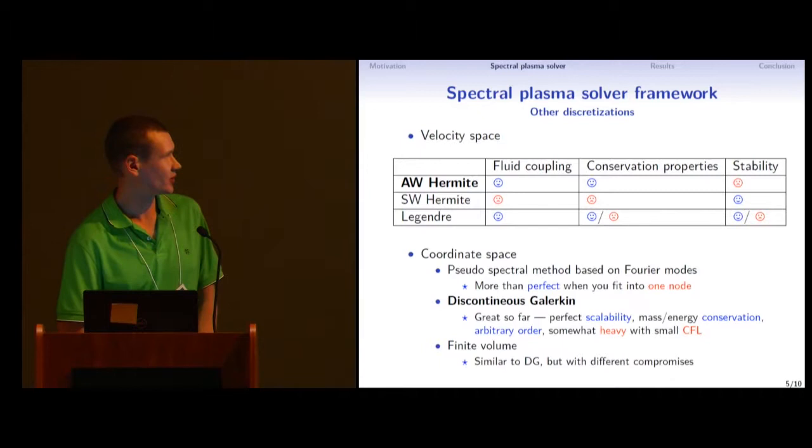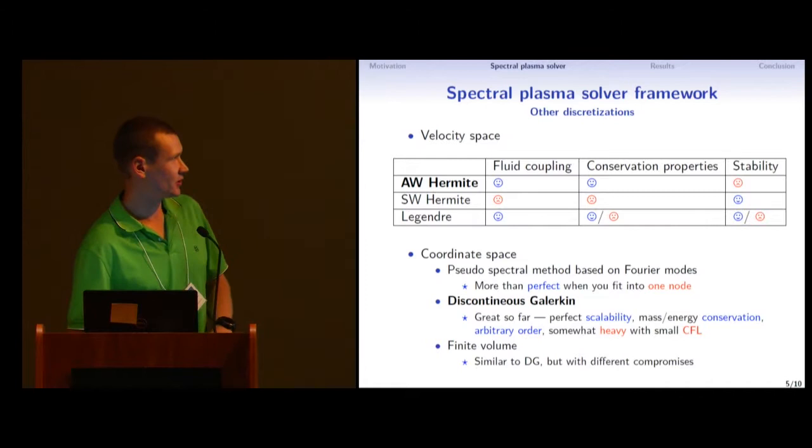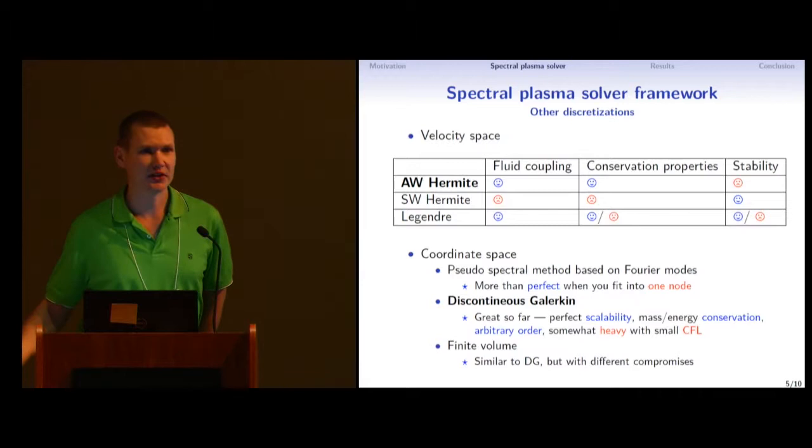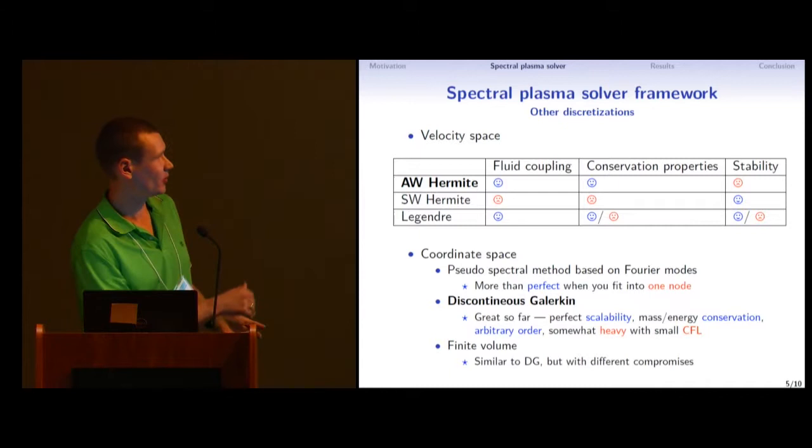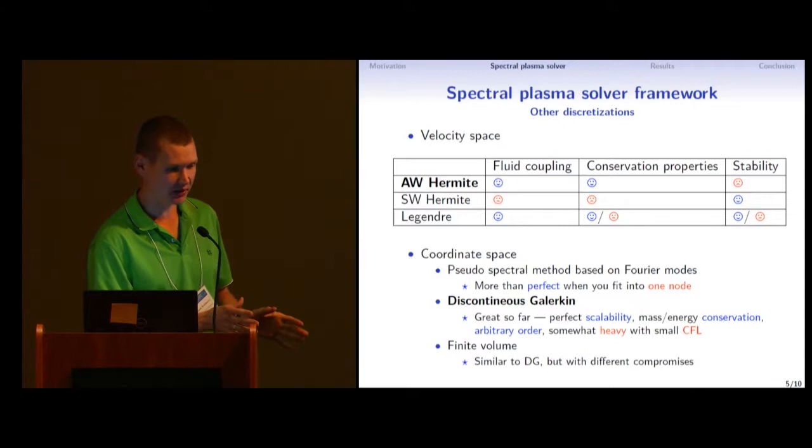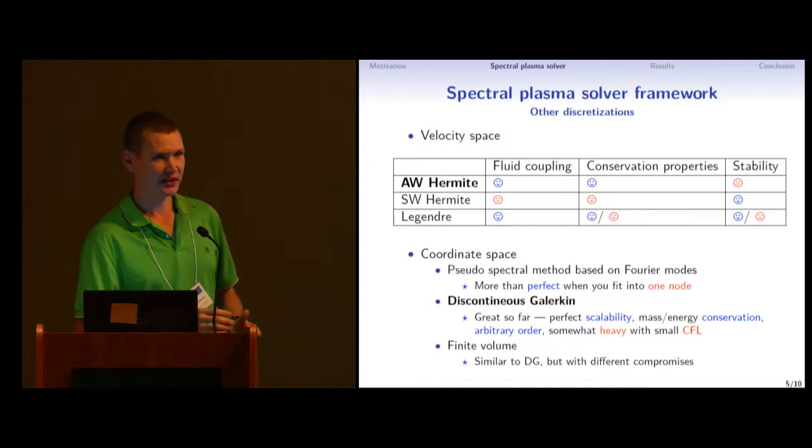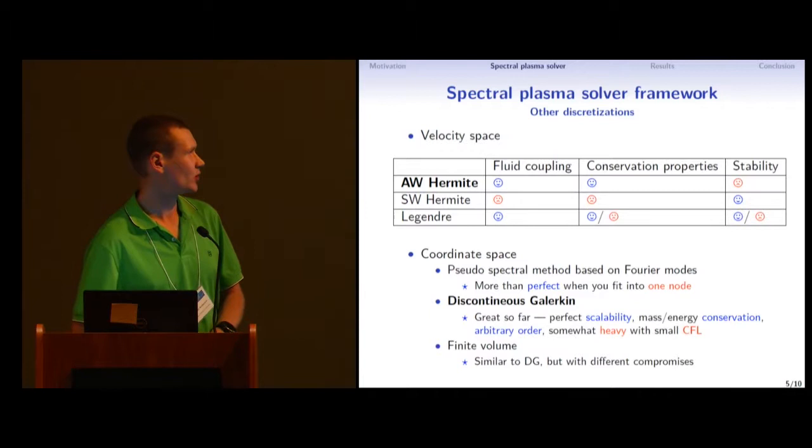Just expanding a little bit about different discretizations. Our favorite so far is asymmetrically weighted Hermite polynomials, which has this fluid coupling. And it also has very nice conservative properties. Unfortunately, it doesn't have guaranteed stability. There is no theorem which proves that this method is always stable. So we are still looking for other expansions. For example, we played with symmetrically weighted Hermite polynomials, which is worse. It doesn't have fluid coupling or good conservation properties, but it's stable. And so we experiment. And probably a good solution would be Legendre polynomials, which has fluid coupling. Legendre polynomials are similar to symmetrically weighted Hermite polynomials. They have fluid coupling and conservation properties, and they are not stable. But there is some mathematical trick you can play to sacrifice a little bit of conservation properties and get some stability guarantees. So maybe in the future, we will move to Legendre polynomials.